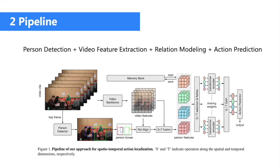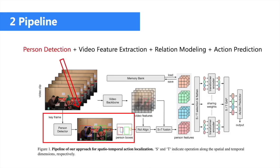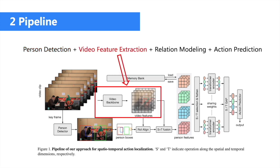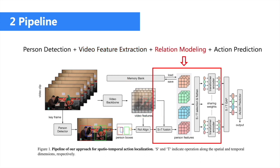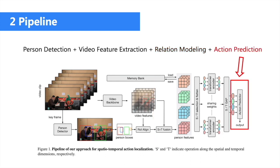Given the input video clip, we first select the keyframe and apply a person detector to generate bounding boxes of people. At the same time, a video backbone is used to extract video features. Then we pool the person features and a relation modeling model is applied to learn the relations among people in the same scene. Finally, we predict actions of each person based on their learned features.